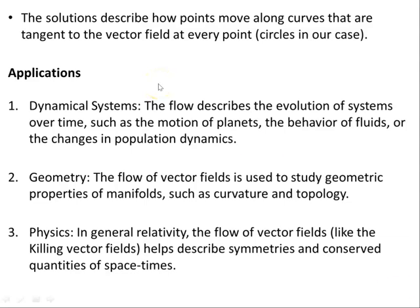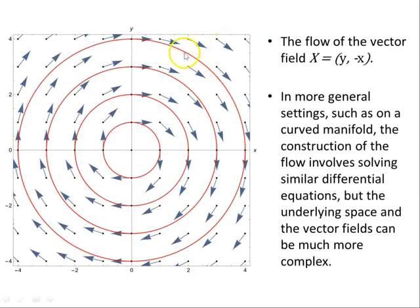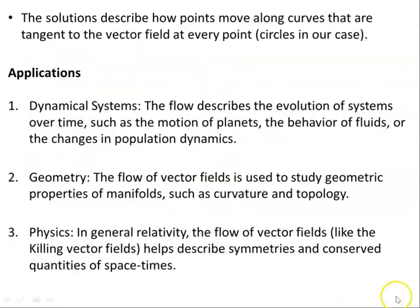The solutions describe how points move along curves that are tangent to the vector field at every point. So circles in our case. The flow lines were the red ones. On the previous diagram, the flow lines are the red ones. And here's your vectors at each point. It's a vector field.